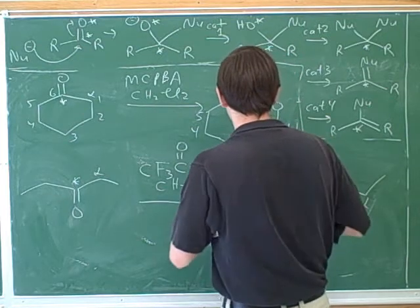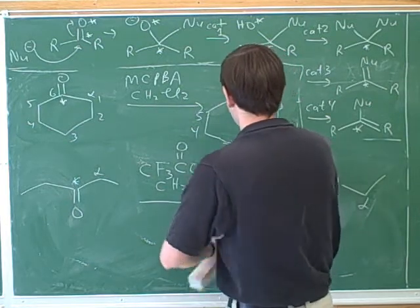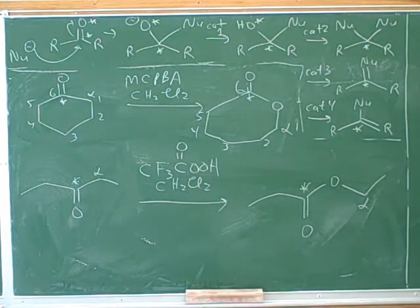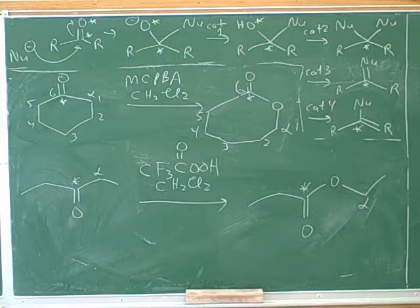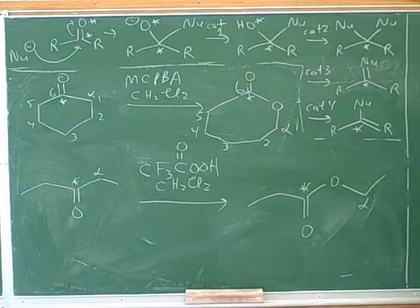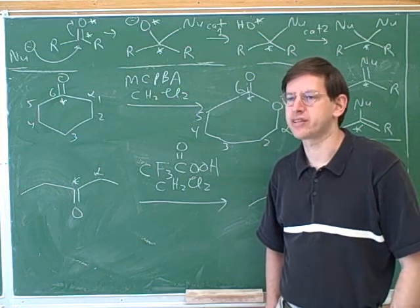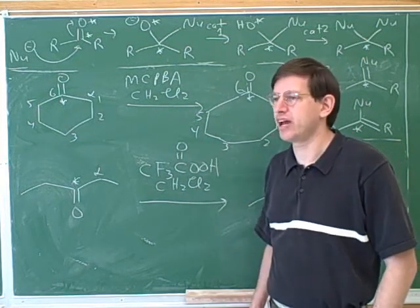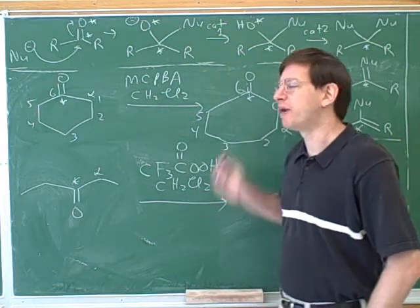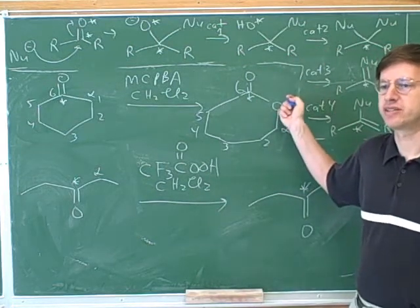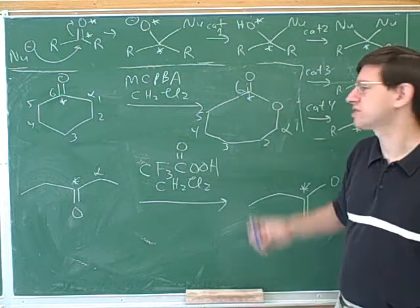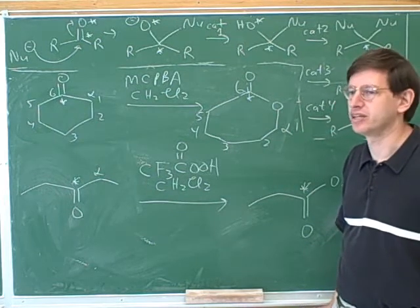If they're giving you MCPBA in CH2Cl2, how do you know that it's not going to do what MCPBA usually does? That's a good question and answer. What does MCPBA do to an alkene? It turns into an oxycyclopropane. But what does MCPBA do to an aldehyde or ketone? It inserts an oxygen. By the way, this is called an ester. You'll be studying that in a week or so. So it makes an ester over here.